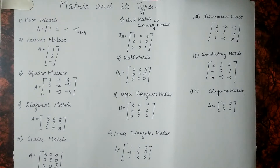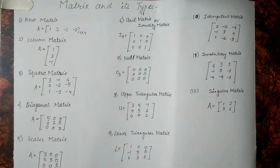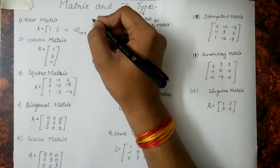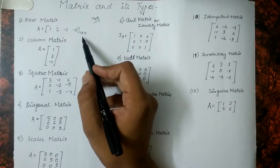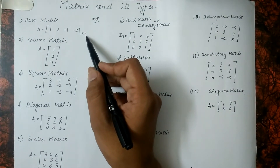Hello friends, welcome to our channel Smart Study with Yash. Today in this video we would be learning about what is a matrix and its types. Firstly, let us understand what is a matrix. A matrix is a combination of rows and columns which together make an array. If there are m number of rows and n number of columns, the order of the matrix would become m into n. For example, see in this matrix we have order 1 into 4.